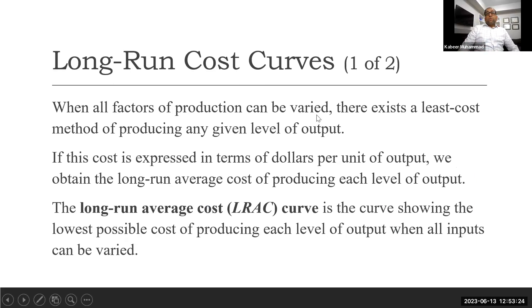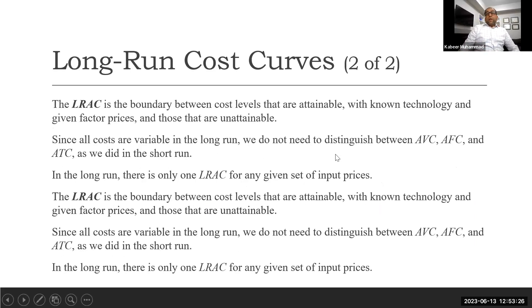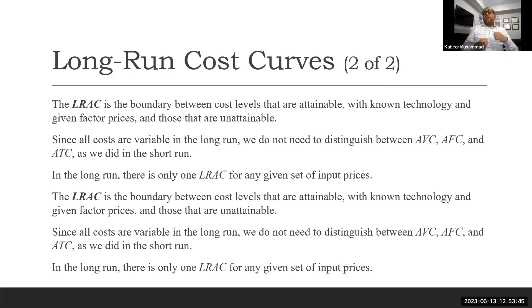When all factors of production can be varied, that is the long run. The long run average cost curve is a boundary between cost levels that are attainable with known technology and technically efficient methods given factor prices, and those that are unattainable. Above this curve, those combinations cannot produce that quantity at minimum cost.